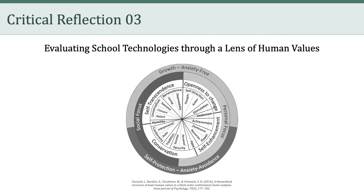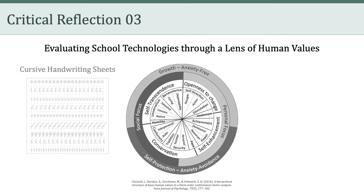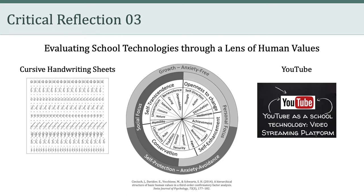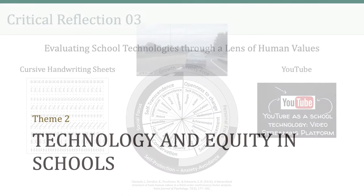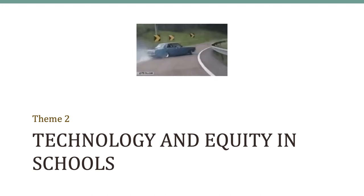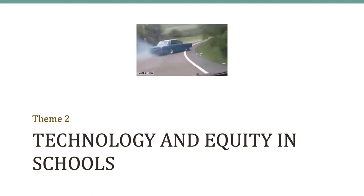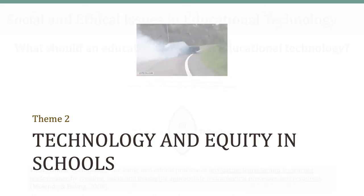Just to pick two extreme examples, we could compare and contrast Judy's example of cursive handwriting sheets with Allison's example of YouTube. I think we could all agree that the values embodied by these two technologies are vastly different, and it is a valuable intellectual exercise to think about how they're different and why. And with that, my friends, we now round the corner into theme two: technology and equity in schools.